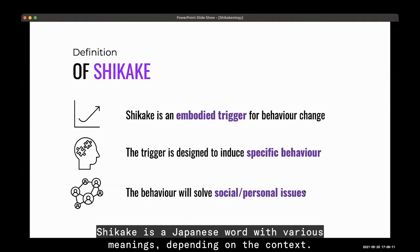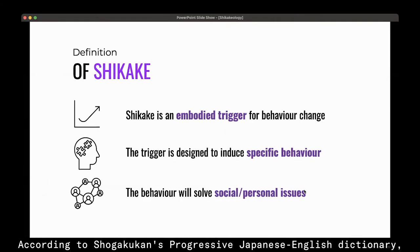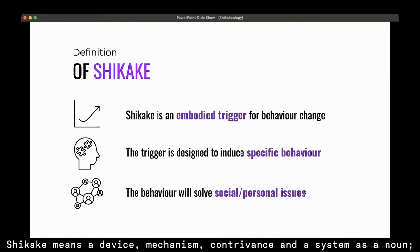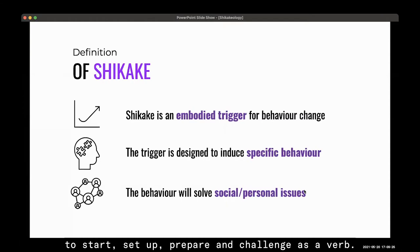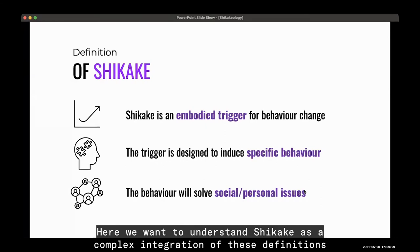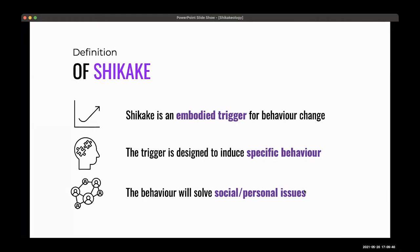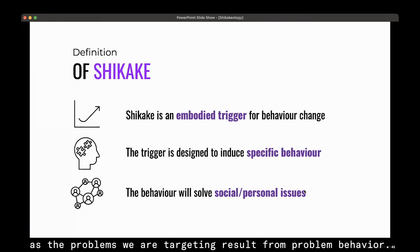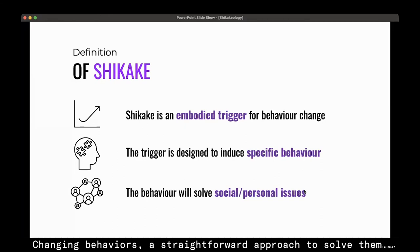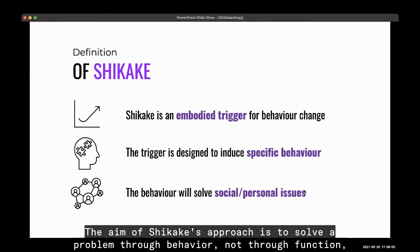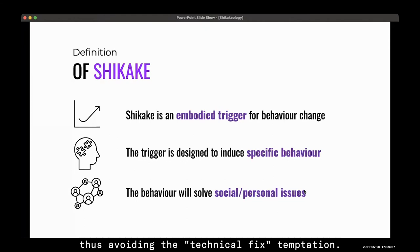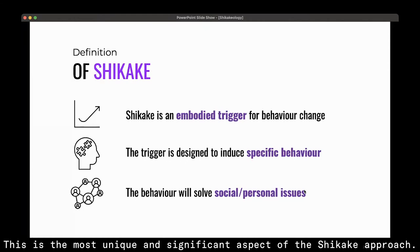Shikake is a Japanese word with various meanings depending on context. According to Shogakukan's Progressive Japanese-English Dictionary, shikake means a device, mechanism, contrivance, and system as a noun, and to start, set up, prepare, and challenge as a verb. We want to understand shikake as a complex integration of these definitions — an approach to trigger behavioral changes that will solve social or personal problems, since those problems result from our own behavior. The aim of the shikake approach is to solve problems through behavior, not through function, thereby avoiding the techno-fix temptation. This is the most unique and significant aspect of the shikake approach.